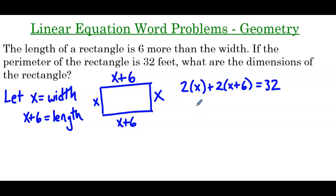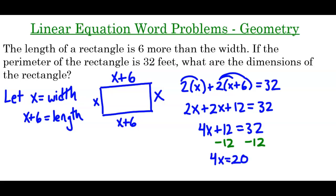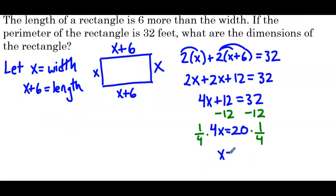Let's start by distributing the 2. So we have 2x plus 2x plus 12 equals 32. On the left side, combining like terms, 4x plus 12 equals 32. Next, we're going to subtract 12 from both sides, giving us 4x equals 20. Multiply both sides by one fourth — or divide by 4, whichever you prefer — and that gives us x equals 5.